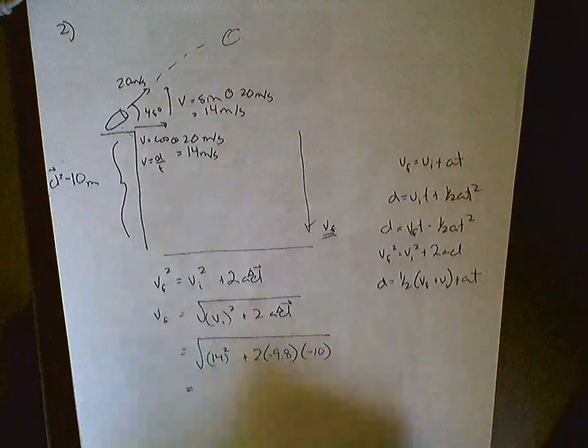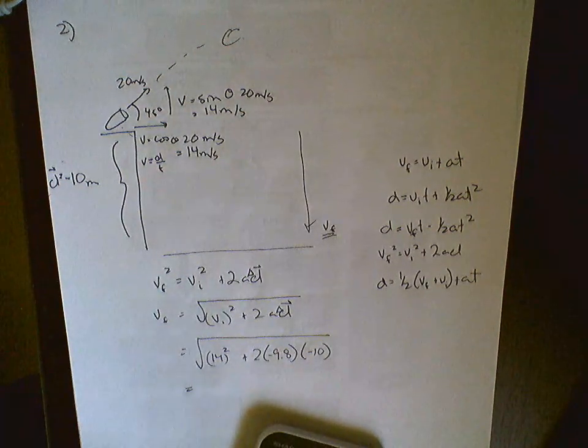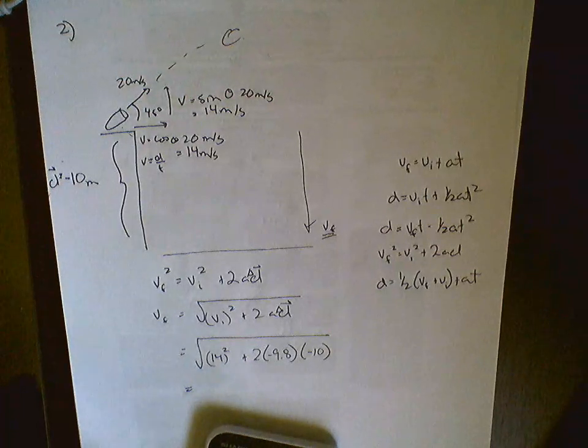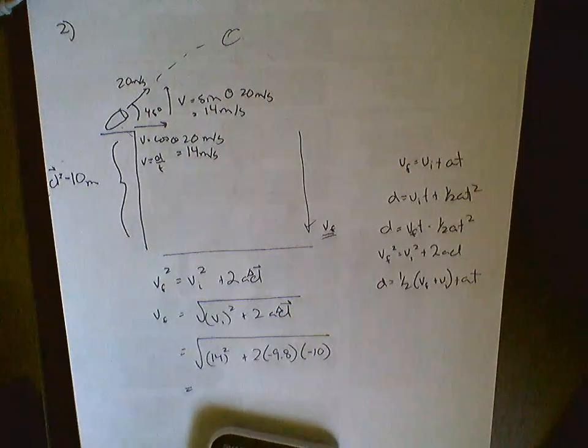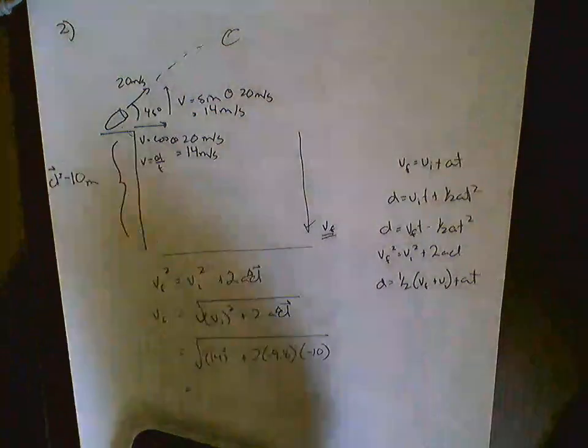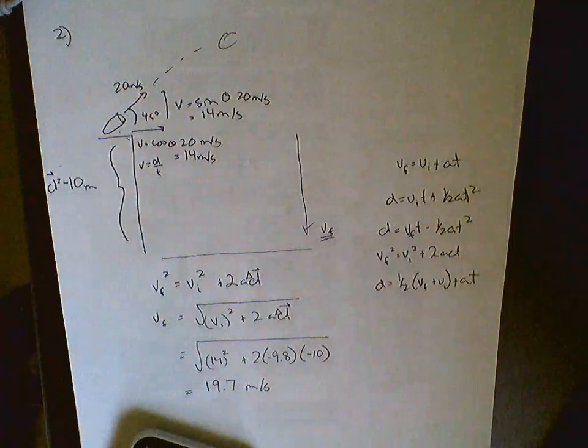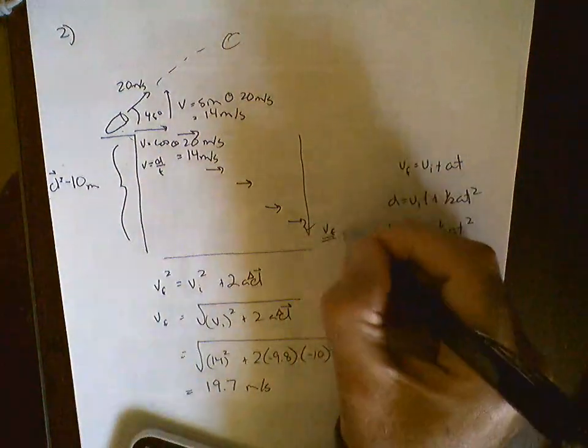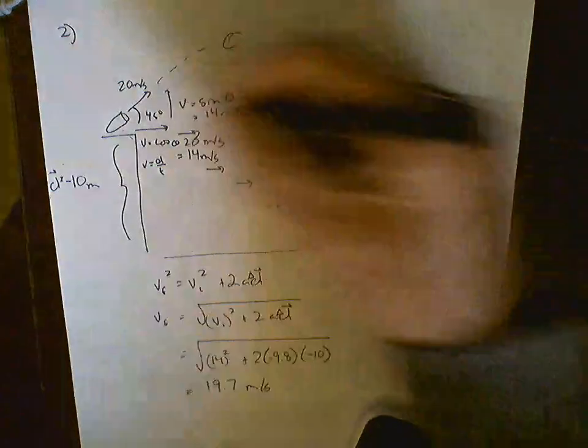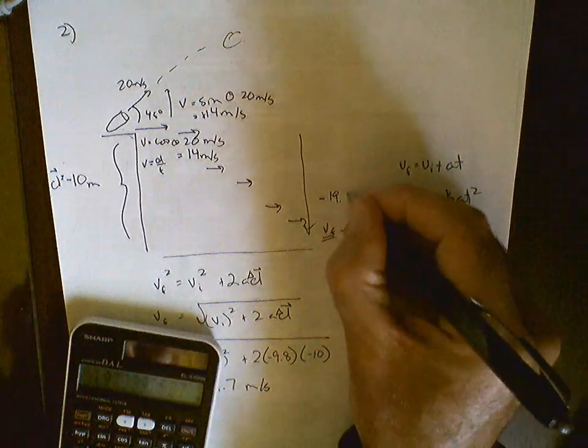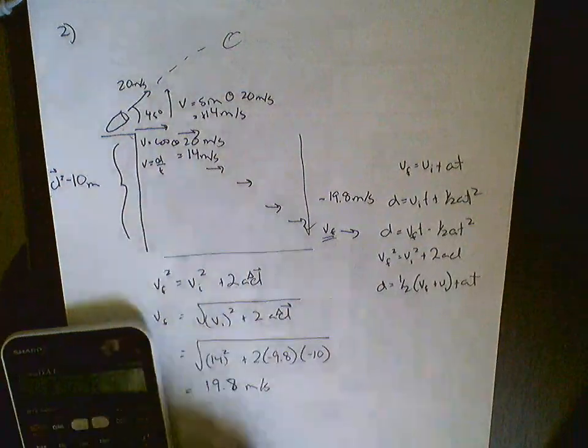So if I do this calculation, bear with me for one minute. I have a final velocity of 19.7 meters per second in the Y direction. Remember, as this goes along in the X direction, it's always going 14 meters per second. As it's going down, it starts at positive 14 meters per second going up and it ends at negative 19.8 meters per second in the Y direction coming down.